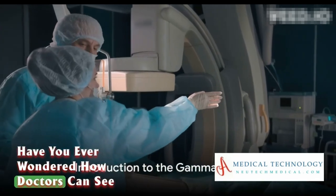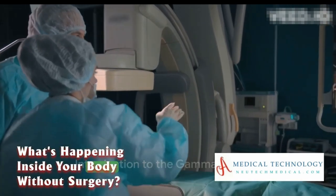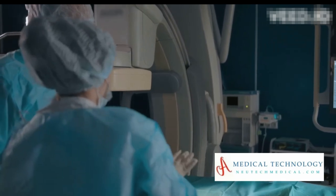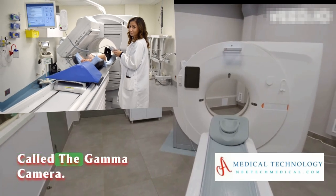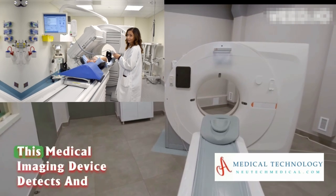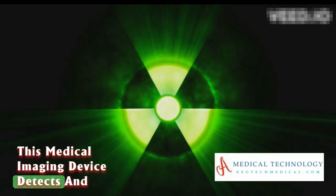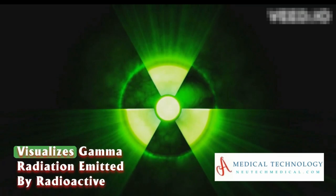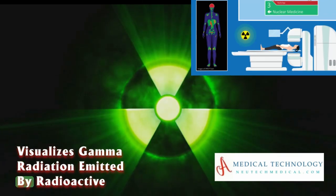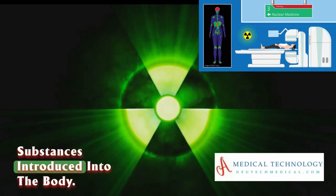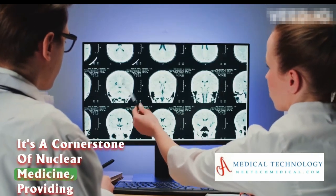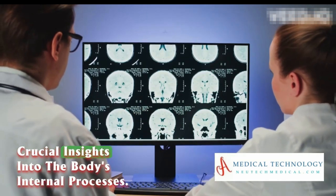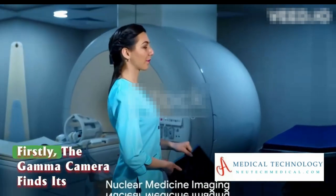Have you ever wondered how doctors can see what's happening inside your body without surgery? The answer lies in a remarkable piece of technology called the gamma camera. This medical imaging device detects and visualizes gamma radiation emitted by radioactive substances introduced into the body. It's a cornerstone of nuclear medicine, providing crucial insights into the body's internal processes.